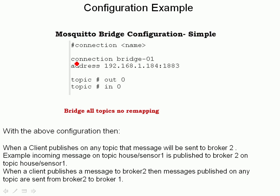Here's a simple configuration file. The first entry is the connection name — we can call this anything we want. Then we have the address of the remote broker; this time I'm using an IP address, but you can use a domain name, followed by the port number. I don't need the port number if I'm using the default port of 1883. Then we have the topic with a wildcard, meaning I'm going to bridge all topics out of broker 1 with a quality of service of 0. If I wanted to bridge with QoS 1 or 2, I'd just change that number.